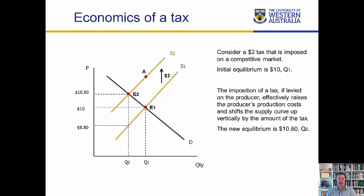Prior to the tax, the supplier needed $10 to supply unit number Q1. After the $2 tax is imposed, the supplier would need $12 — the $10 they needed previously and an additional $2 to cover the tax. So in this diagram, point A is at a vertical height of $12.